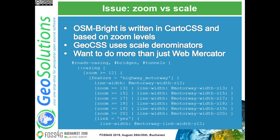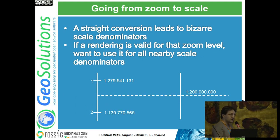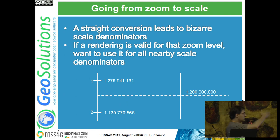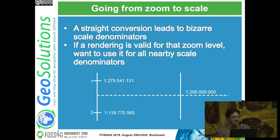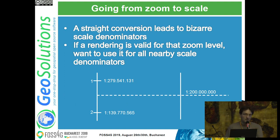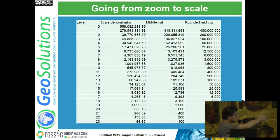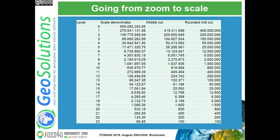This is nice and useful if you only care about web mercator, but what if you are targeting a different projection? One of the reasons to do this work was actually doing OSM in whatever projection I want. Also, GeoCSS uses scale denominators not zoom levels, so I could have just translated the zoom level to the exact scale denominator - which is a bizarre number - but any slight change in scale denominator would have resulted in a different map than intended. So I did the midpoint cut between scale denominators and turned it into round numbers: 400 million, 200 million, 100 million, 50 million, 25 million, and so on.